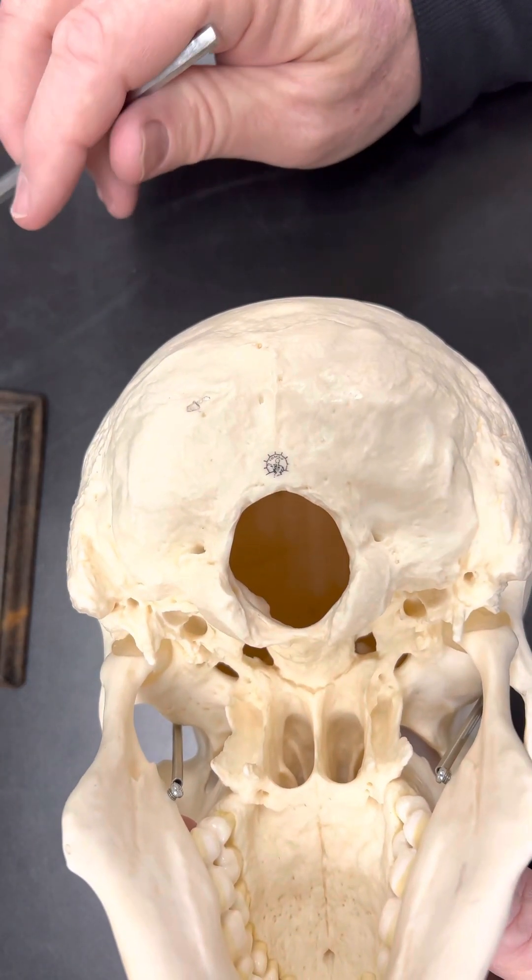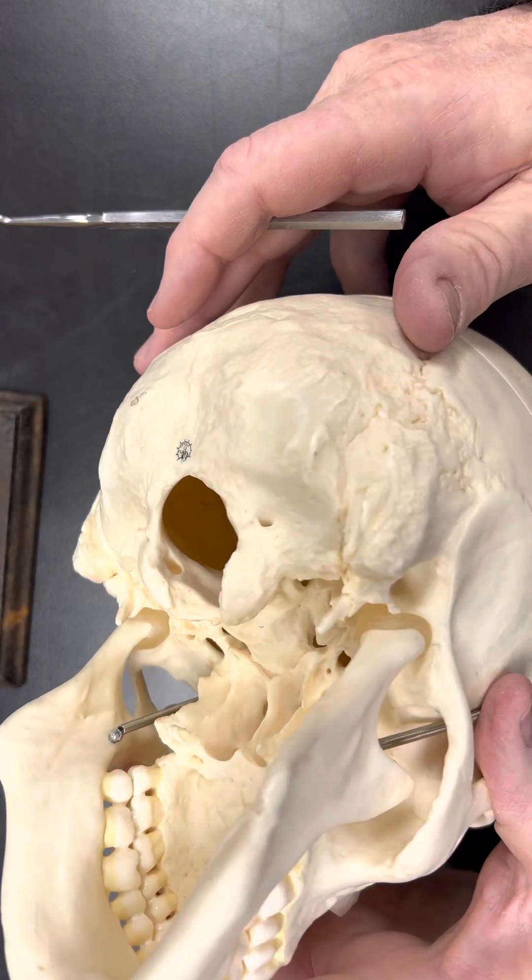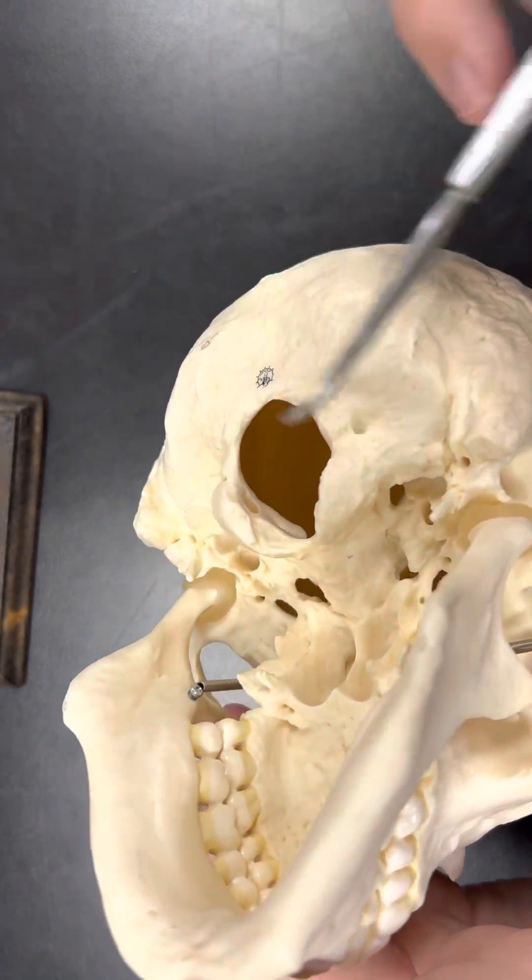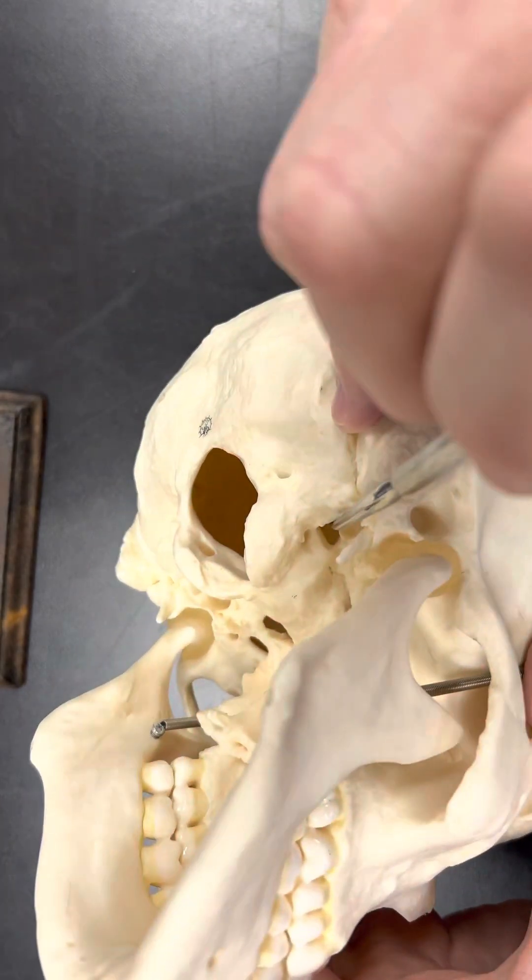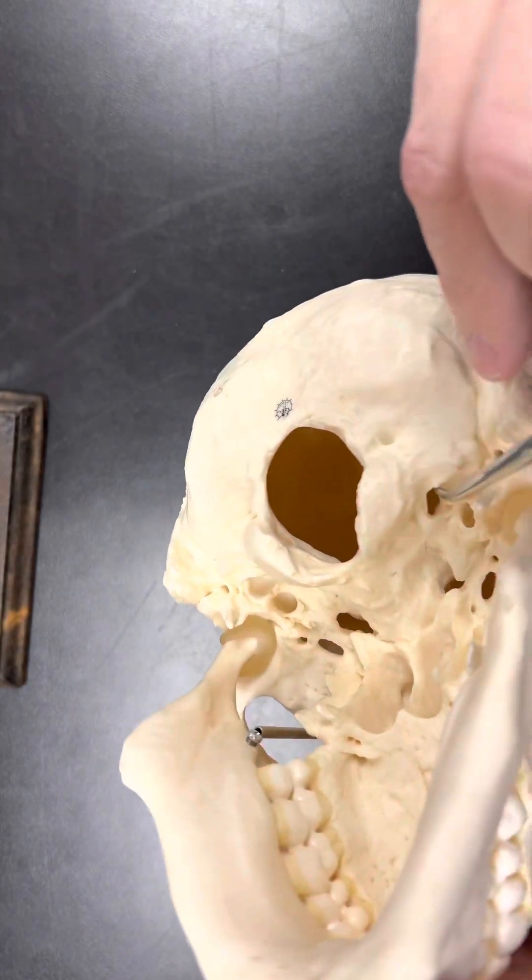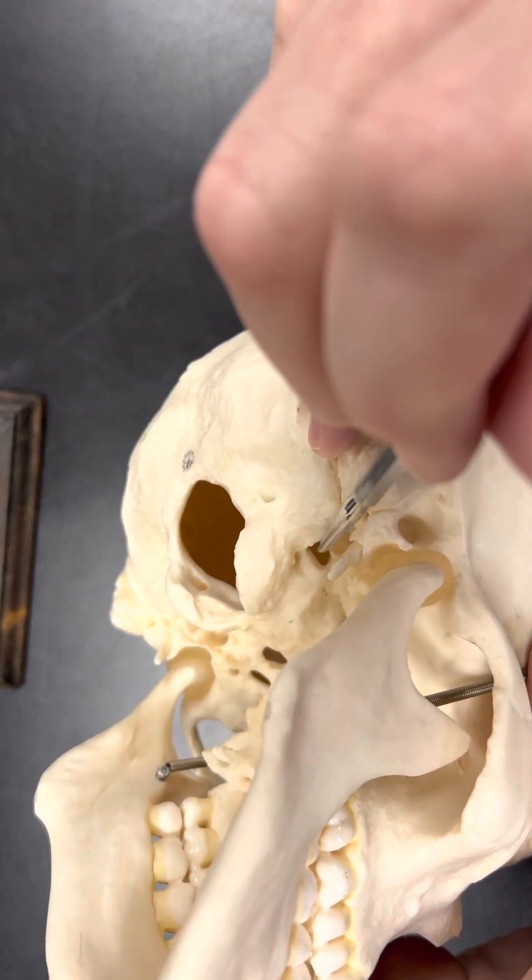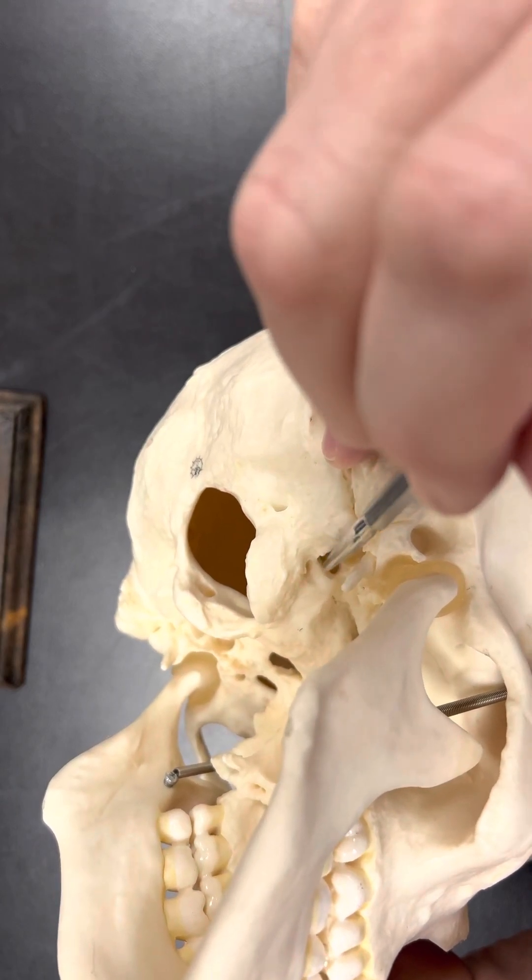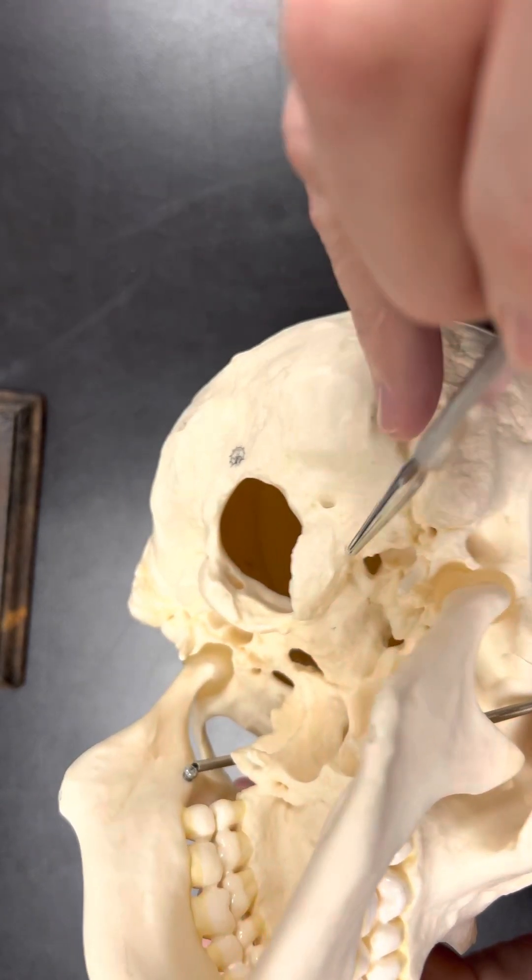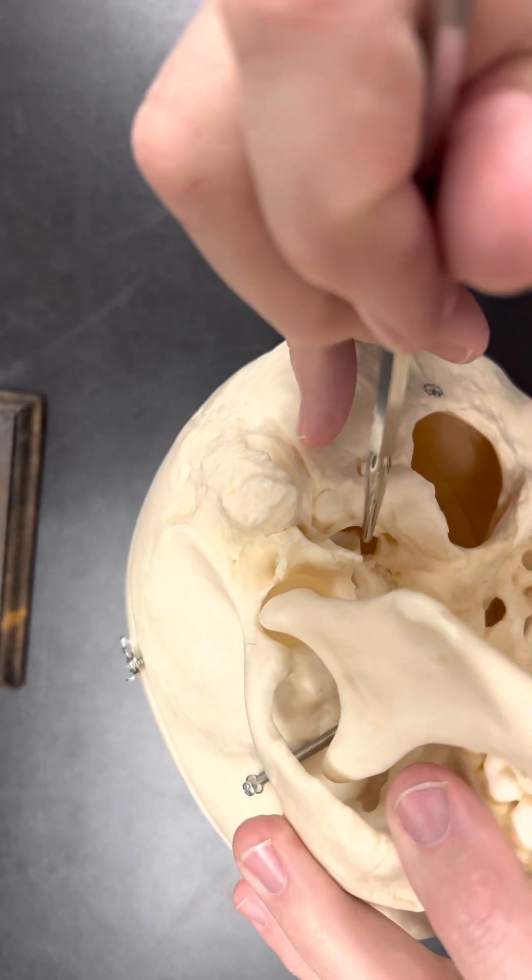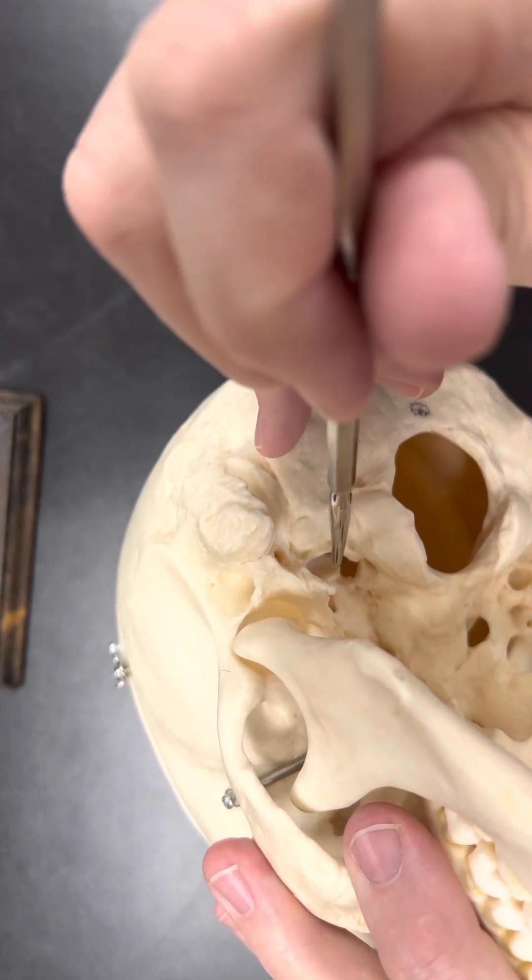The foramen magnum is where your brain stem comes out and turns into your spinal cord. And then if I just go on the side right here, I am going to see there's kind of like a heart-shaped foramen right there. That is going to be my jugular foramen. I have a jugular foramen on this side and also a jugular foramen on this side.